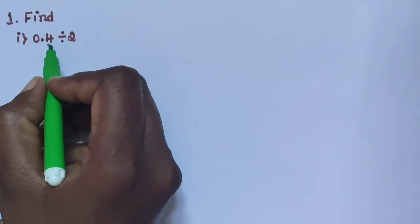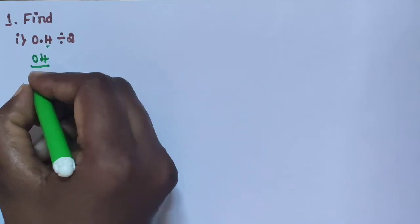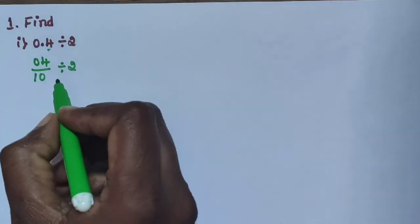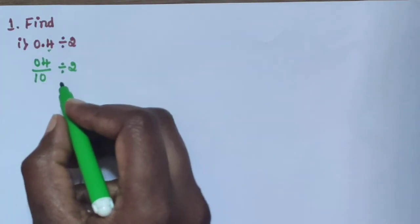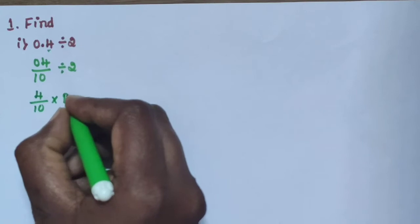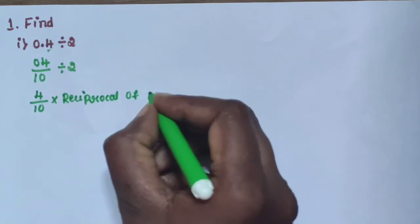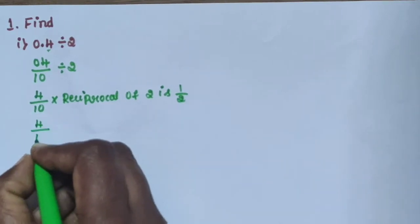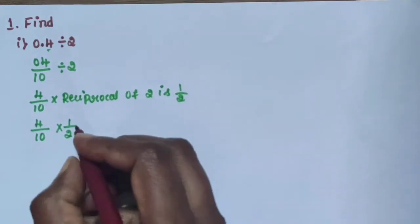0.4 — the digit 4 is in the 10th place, so write 0.4 as 4 divided by 10. Divide by 2. The division sign can be removed using a reciprocal fraction, so 0.4 becomes 4 divided by 10, multiplied by the reciprocal of 2, which is 1 by 2.